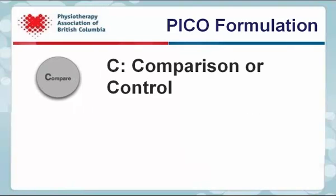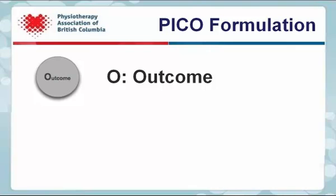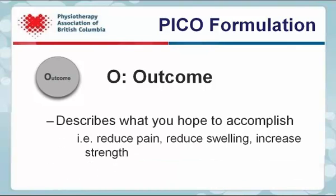C represents the comparison or control. It describes the alternative treatment being considered, if there is one. O represents the outcome. It describes what you hope to accomplish — for example, a reduction in pain, reduction in swelling, or an increase in strength.